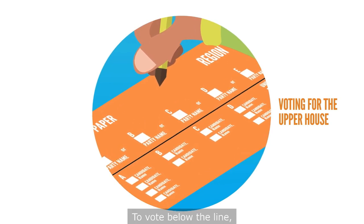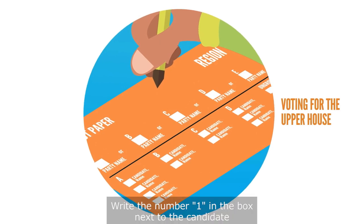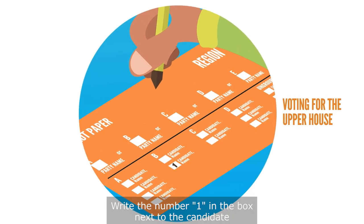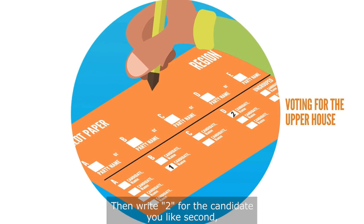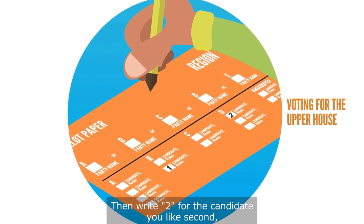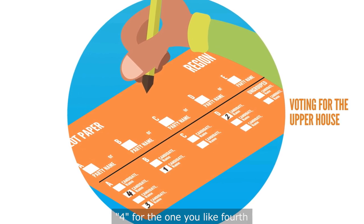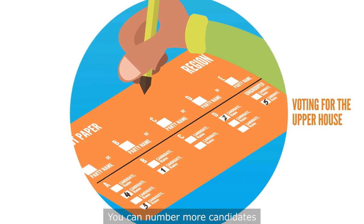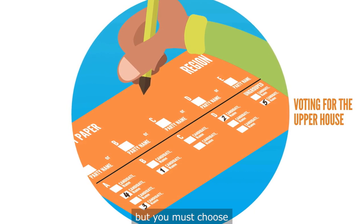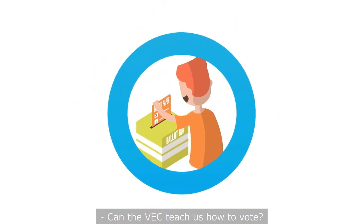To vote below the line, you need to pick at least five candidates. Write the number one in the box next to the candidate you would most like to win the election. Then write two for the candidate you like second, three for the one you like third, four for the one you like fourth and five for the one you like fifth. You can number more candidates if you wish, but you must choose at least five candidates.